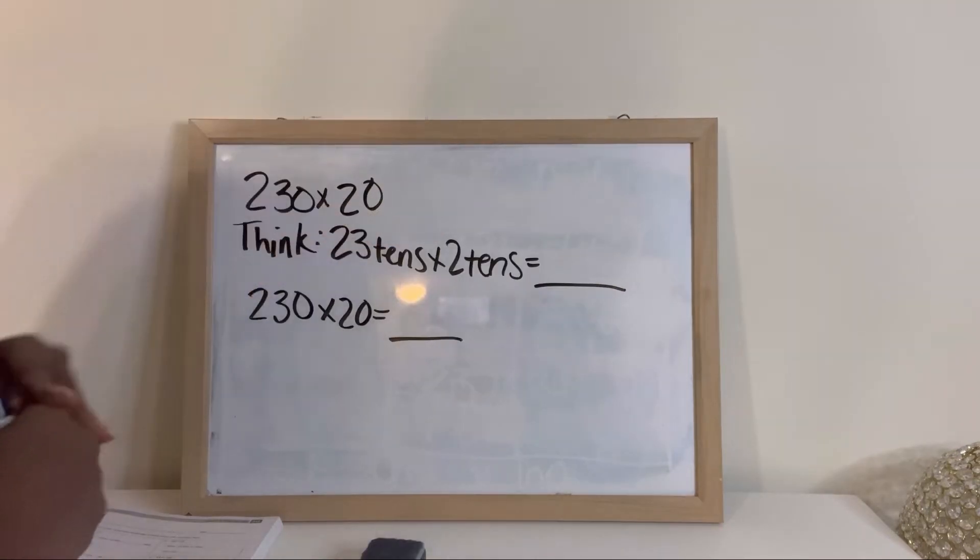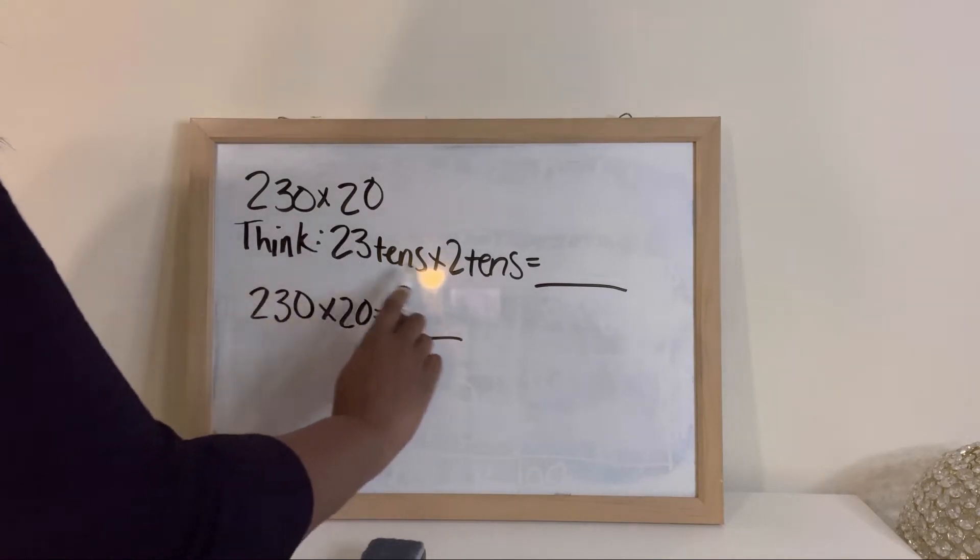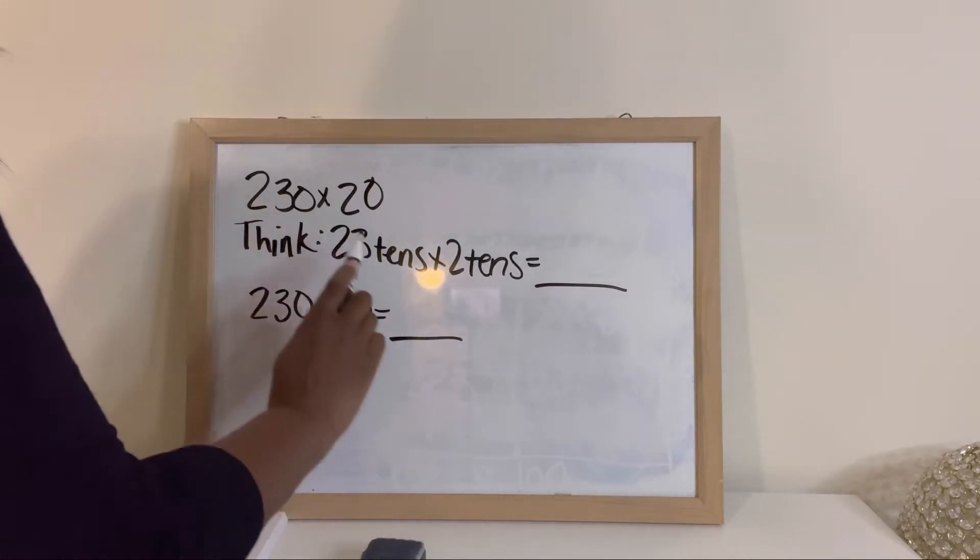Let's do another example. Three-digit number times a two-digit number, so it's a little bit larger than the one we did before. They have already indicated what the unit form for each is.